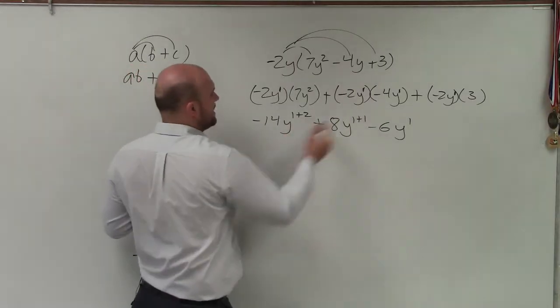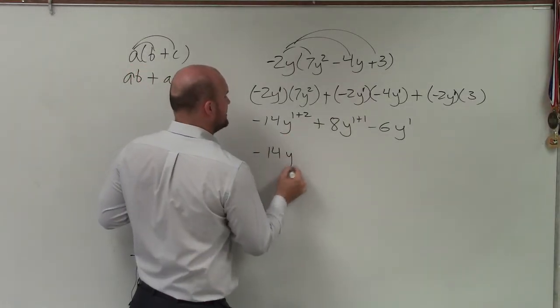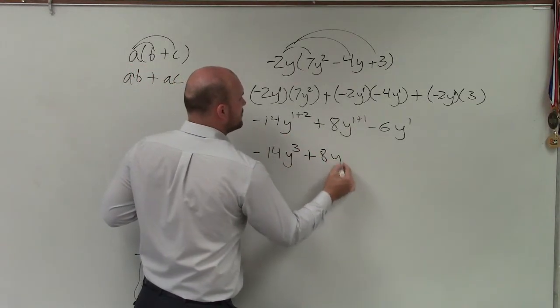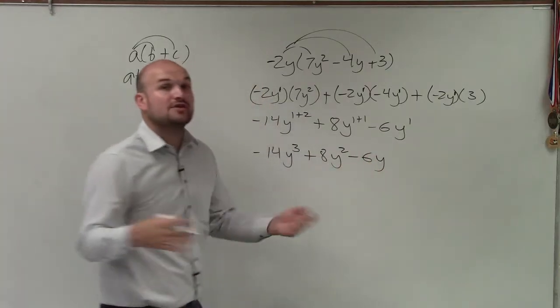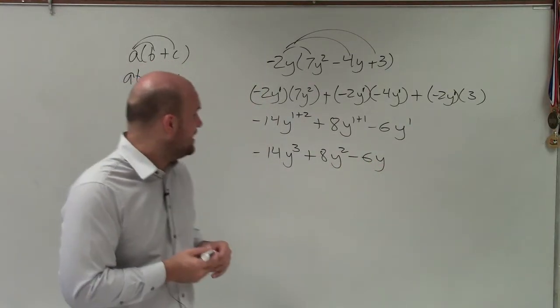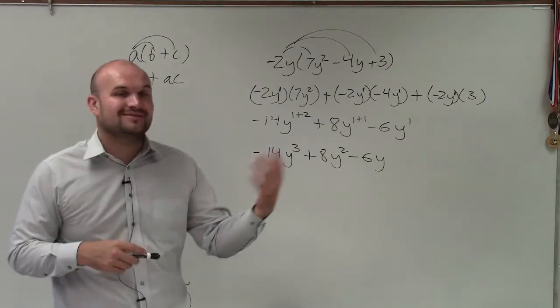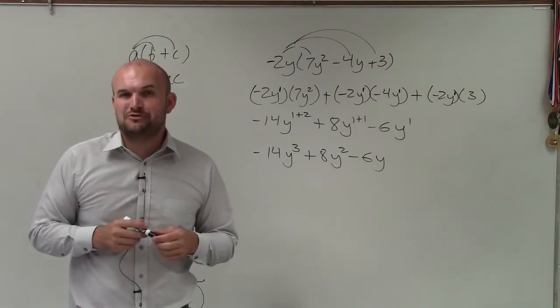All right, so now I'll just simplify this one more by adding my powers. So I have negative 14y cubed plus 8y squared minus 6y. So there you go, ladies and gentlemen. That is how you multiply a monomial times a trinomial by applying the distributive property. Thanks.